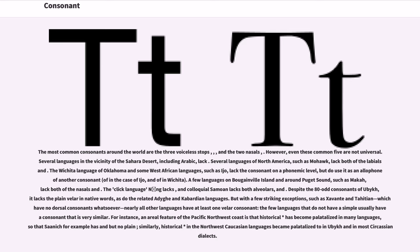The most common consonants around the world are the three voiceless stops /p/, /t/, /k/ and the two nasals /m/, /n/. However, even these common five are not universal. Several languages in the vicinity of the Sahara Desert, including Arabic, lack /p/. Several languages of North America, such as Mohawk, lack both of the labials /p/ and /m/. The Wichita language of Oklahoma and some West African languages, such as Ijo, lack the consonant /p/ on a phonemic level but use it as an allophone of another consonant—of /f/ in the case of Ijo and of /b/ in Wichita. A few languages on Bougainville Island and around Puget Sound, such as Makah, lack both of the nasals /m/ and /n/.